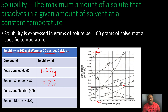Now go ahead and take about 30 to 45 seconds to find the rate of solubility in grams for potassium chloride and sodium nitrate at 20 degrees Celsius in 100 grams of water. You can go ahead and pause the video now.